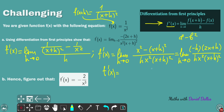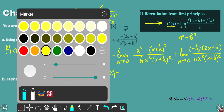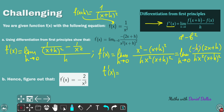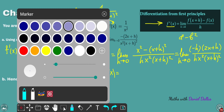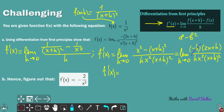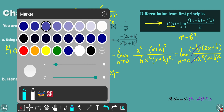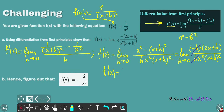The h in the numerator and denominator cancel (since h is not zero, just very tiny), leaving the negative sign. We get the limit as h → 0 of -(2x + h) / [x²·(x + h)²]. That completes part a.